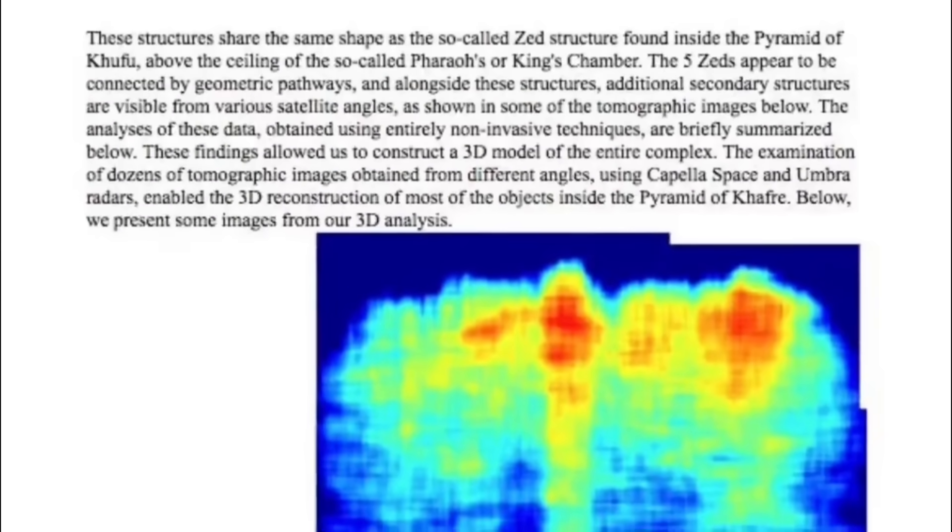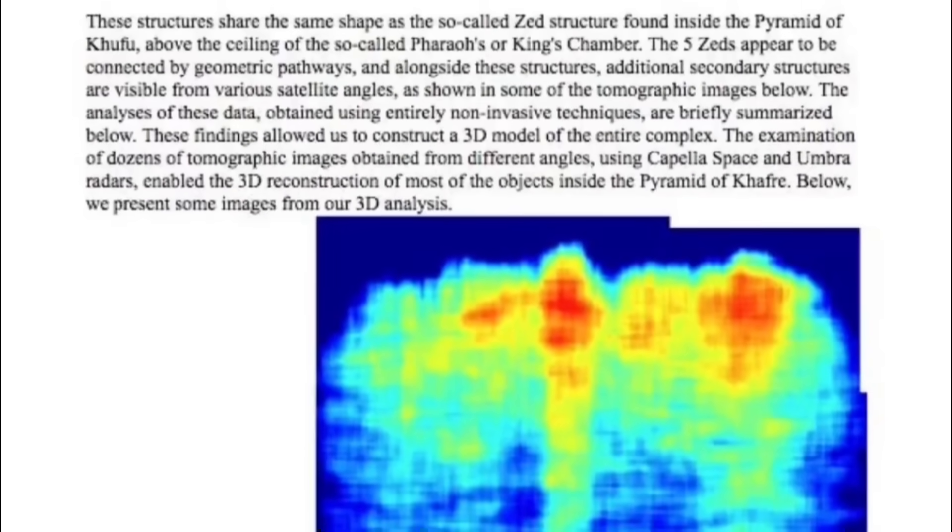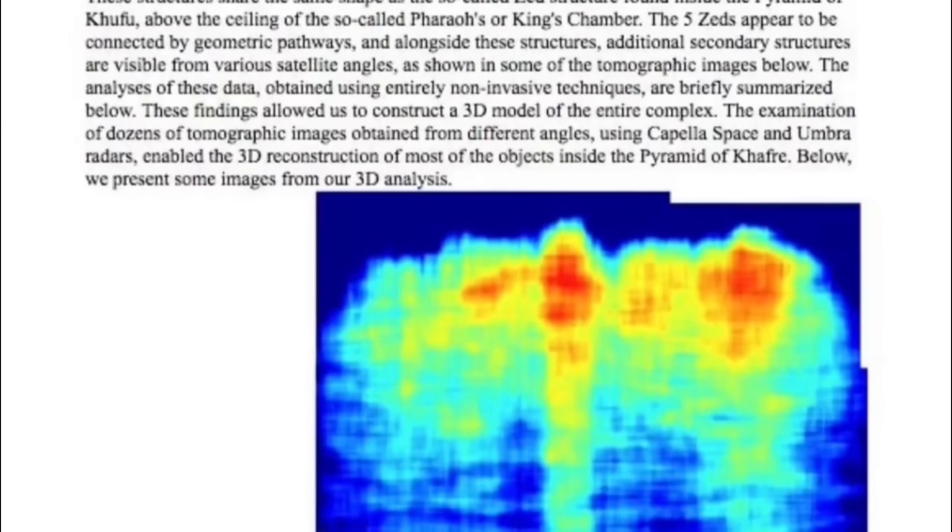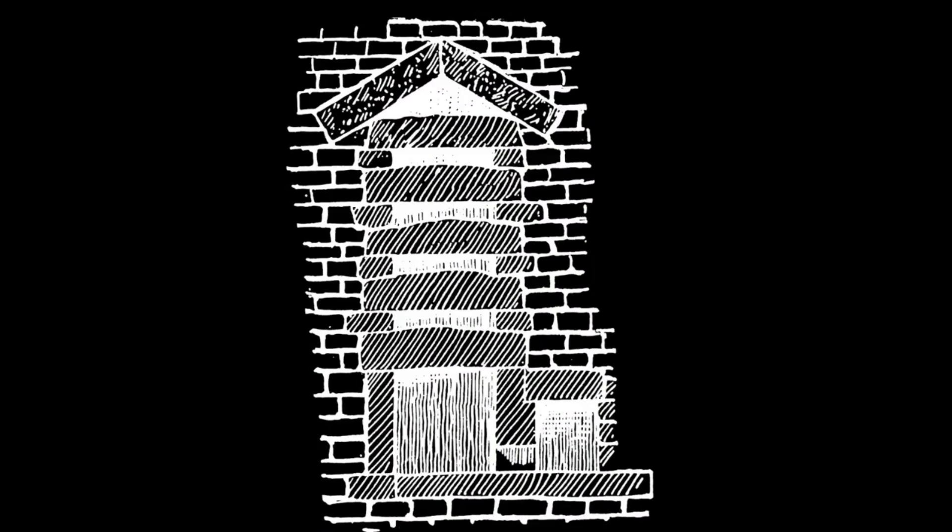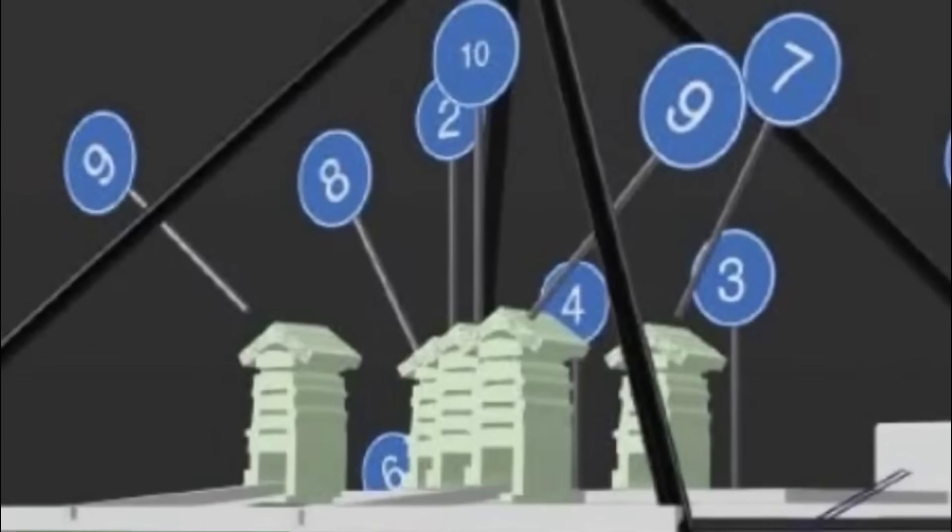The abstract paper then goes on to say that these structures share the same shape as the so-called Z structure found inside the pyramid of Khufu, above the ceiling of the so-called pharaoh's or king's chamber.